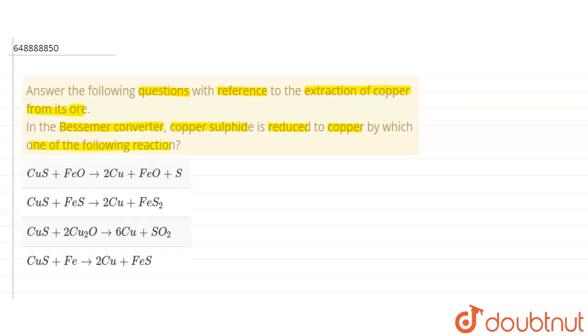We have four options. So first of all, we know that the sulfide ore of copper is basically heated. The first step is that it is heated.